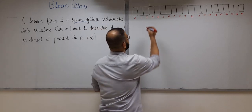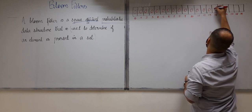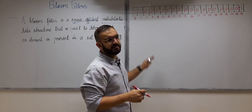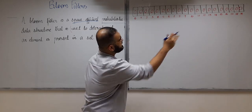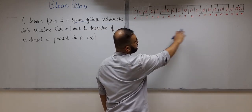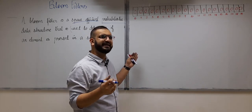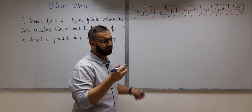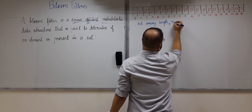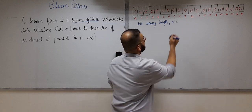When the bloom filter is empty, all indexes contain zero — the entire bit array contains just zeros. The index starts from zero and goes up to 19, so the total number of indexes is 20. I'll call the bit array length n, so n equals 20.